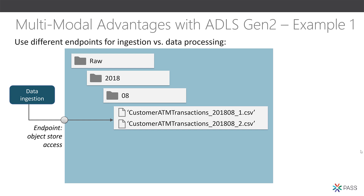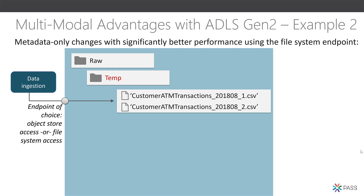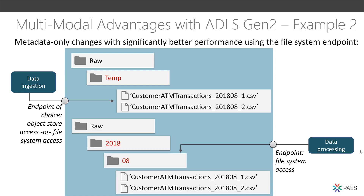Let me illustrate with three examples. First, if you have a data ingestion process that has been running and you have no desire to rewrite it, that's fine — leave it in place as is. You could introduce a new data process that uses the new file system endpoint, using both endpoints in conjunction. Second, if data ingestion is going to a temp folder, use the new file system endpoint when processing and partitioning that data into a year-month-date folder structure. In an object store with 10,000 files, this would be 10,000 deletes and 10,000 moves.